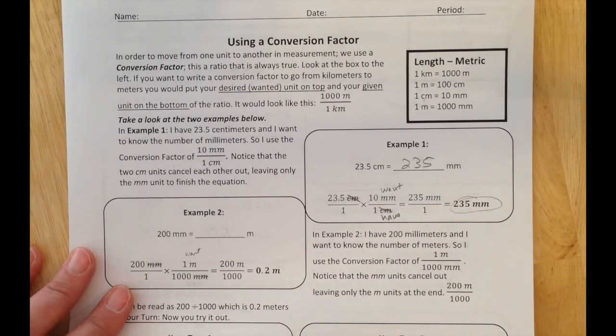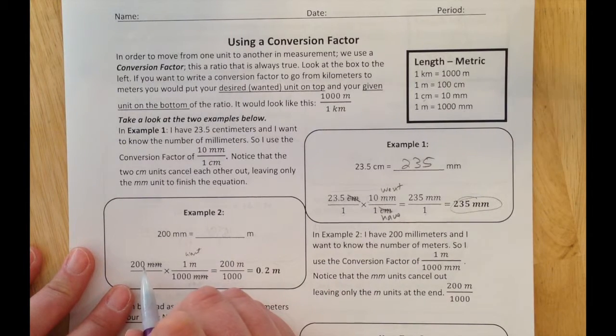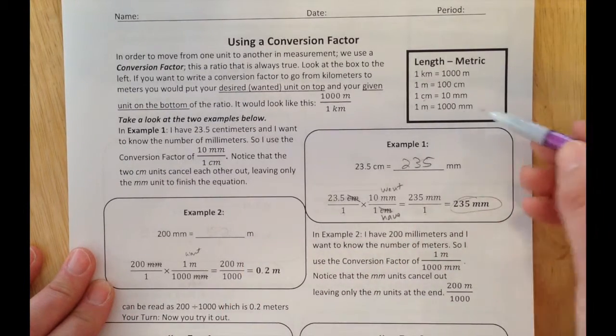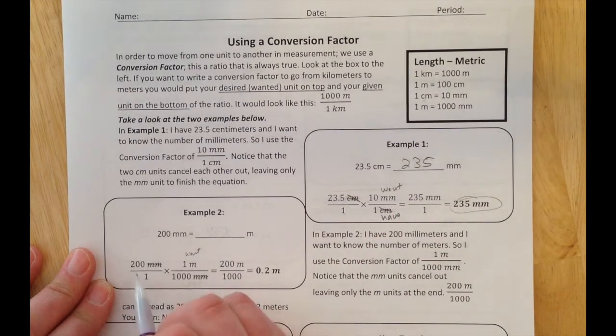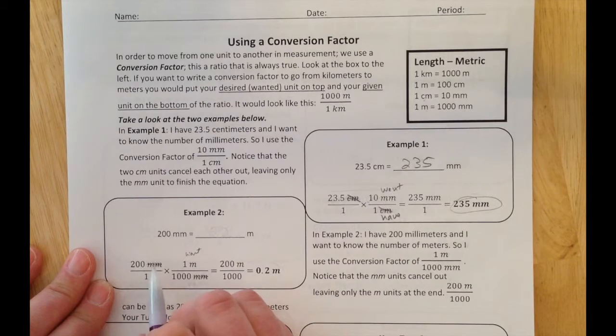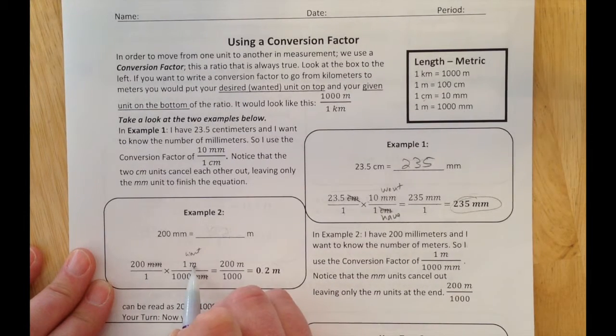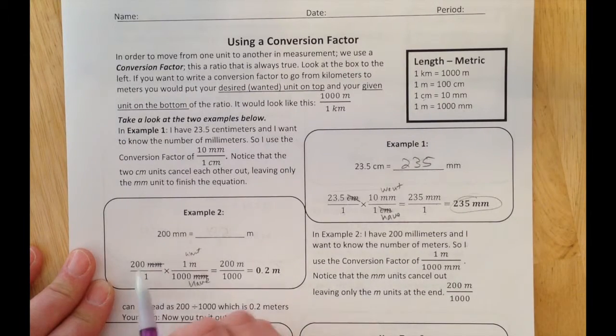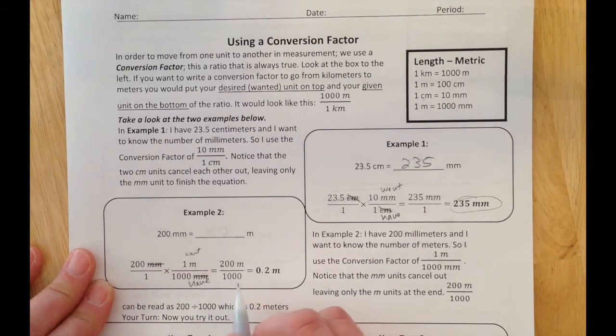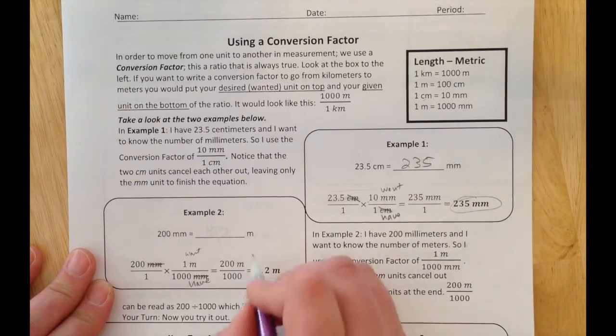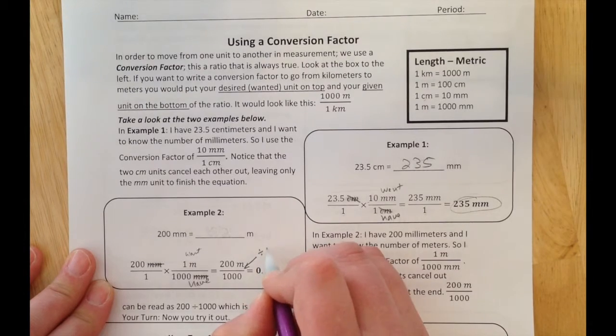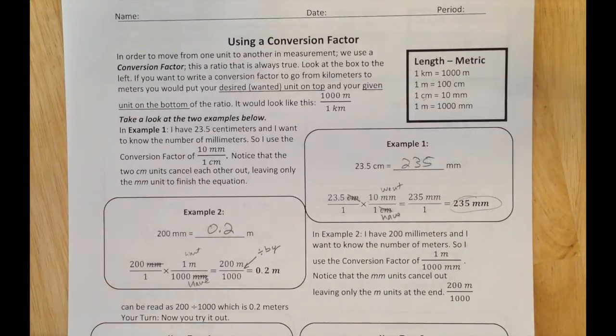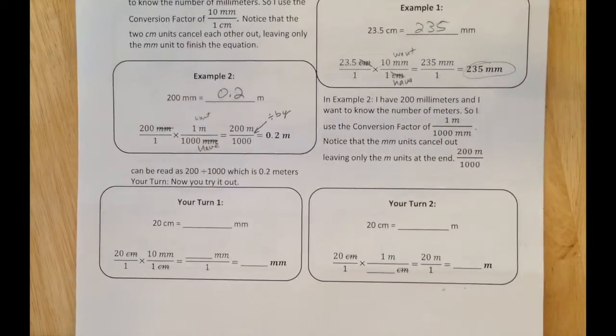I can do the same thing over here. I have a similar problem, except this time I have 200 millimeters and I want meters. There's 1000 millimeters in every meter. So 200 millimeters over 1, and then I multiply by 1 meter over 1000 millimeters. So now I have 200 meters over 1000. This line can be read as divided by, so that will be 0.2 meters. That is the basics for conversion factors.